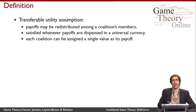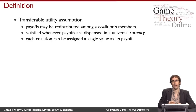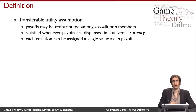We're going to begin by making an assumption called transferable utility. What this assumption means is that it's possible for a coalition to redistribute the value that it's able to achieve arbitrarily among its members. For example, if the coalition is paid its value in money, it would be possible to divide up that money and make side payments among the members in any way. In general, this assumption means we can assign a single value as the payoff to a coalition and trust that it can be arbitrarily divided up among the members.